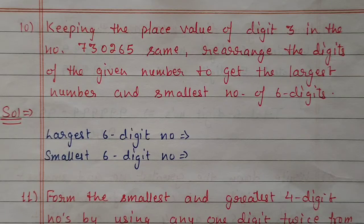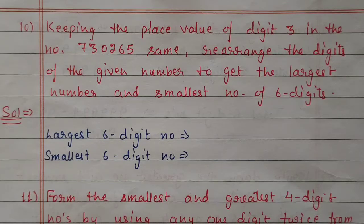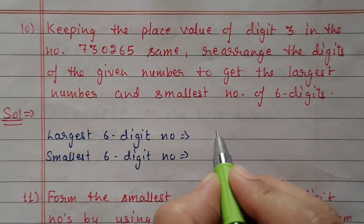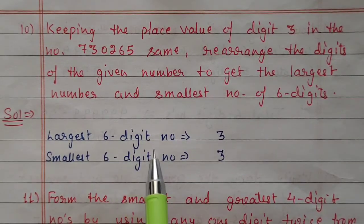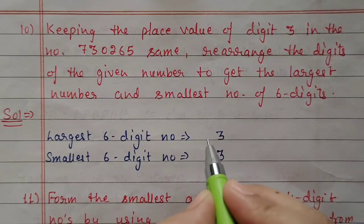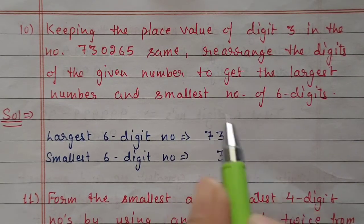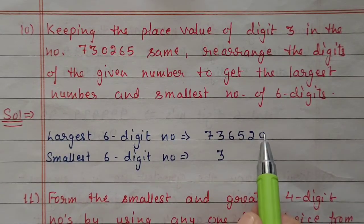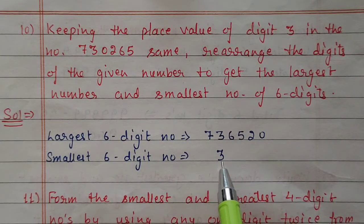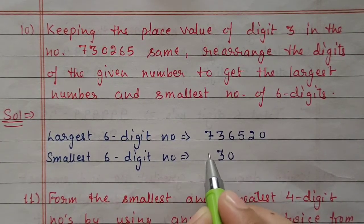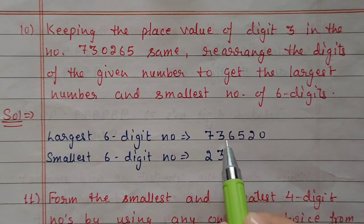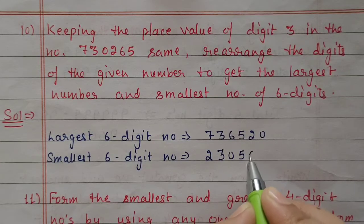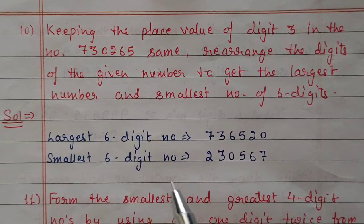Next question number 10: keeping the place value of digit 3 in number 730265 the same, rearrange the remaining digits to get the largest and smallest 6-digit number. Here 3 is fixed in its position. Remaining digits are 7, 6, 5, 2, and 0. To make the largest number, keep the largest on the left: 7, then 6, 5, 2, 0 — giving 7_3_65_20 arrangement. To make the smallest number, do not keep 0 at the first place; 0 comes at second position after the fixed 3, giving 2_3_0567 arrangement.